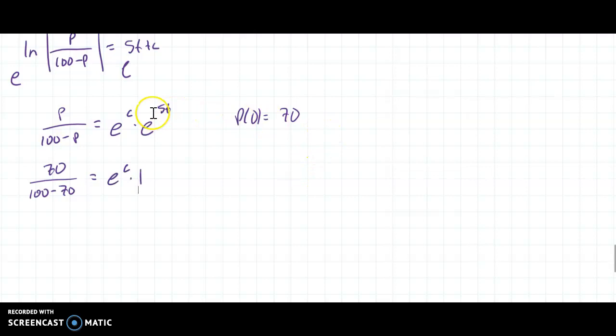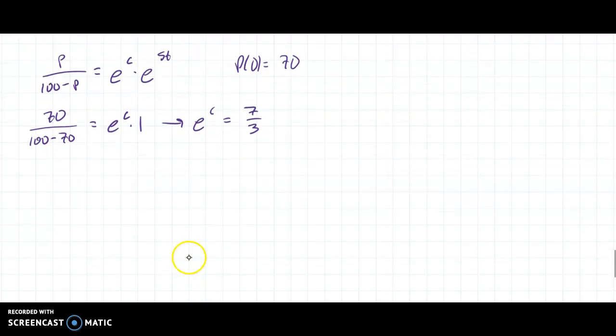Why is it 1? Because when this t value is 0, I get e^0, which is 1. So really, that just tells me that e^c is equal to 70/30. So that gives me 7/3. All right. Is that correct? Yeah.